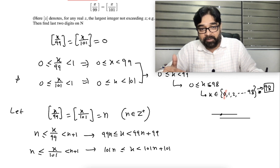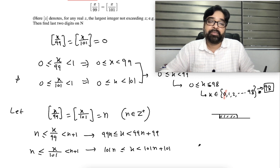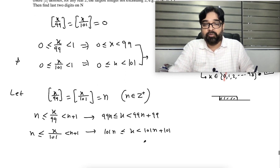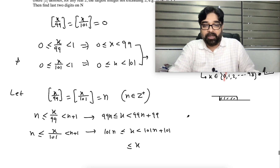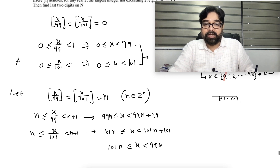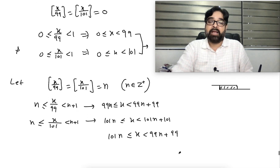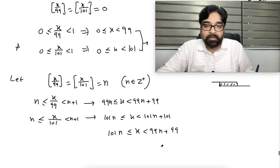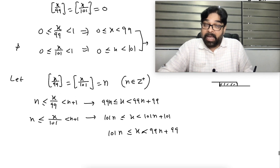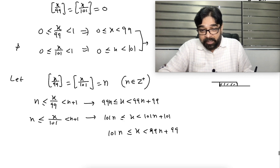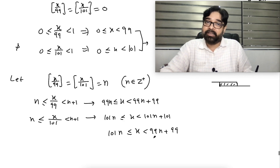The common value of these two intervals — when you have two overlapping intervals — is determined by taking the larger left endpoint and the smaller right endpoint. So the common x values satisfy: x is greater than or equal to 101n, and x is less than 99n+99.